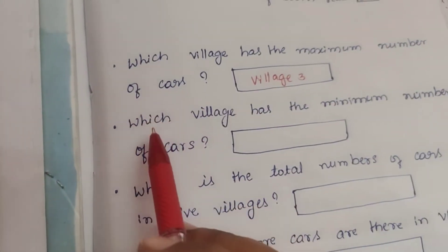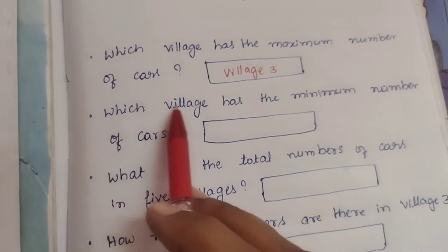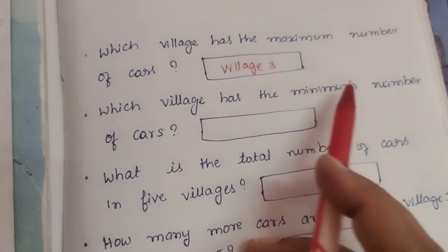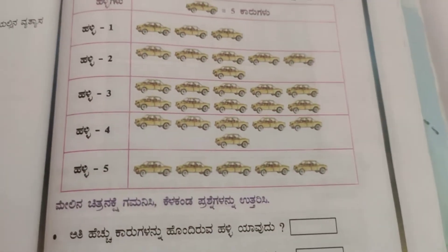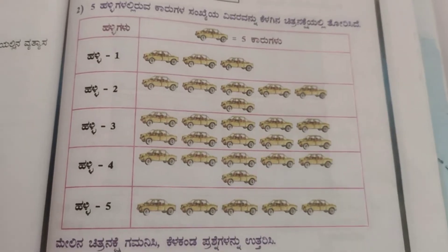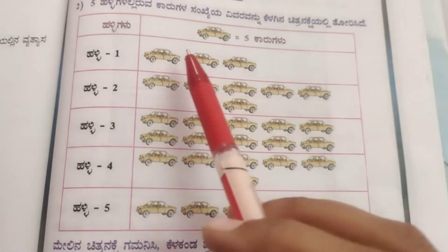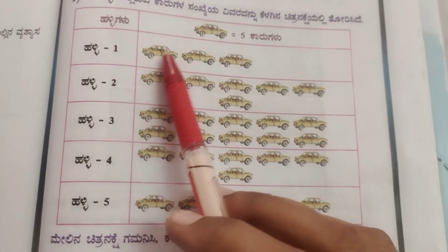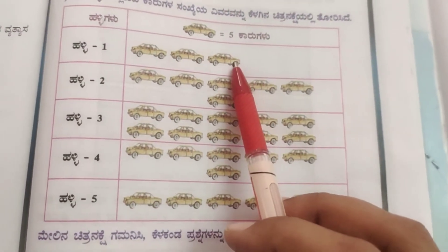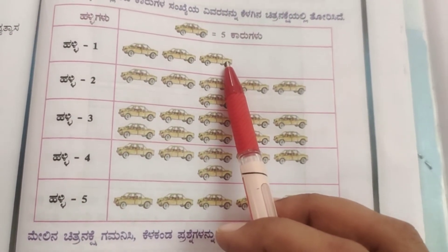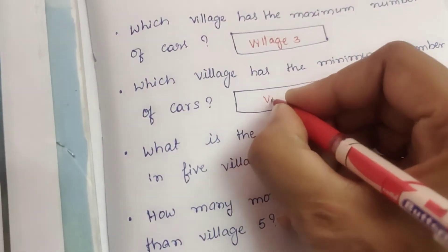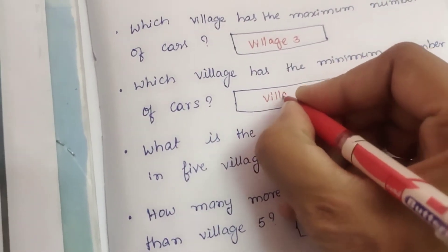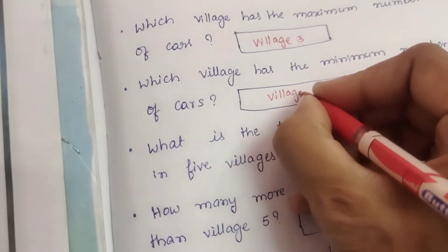Second question: Which village has the minimum number of cars? The first row (Village 1) has only 3 pictures, which is the fewest. So Village 1 has the minimum number of cars.